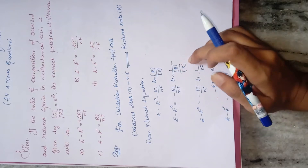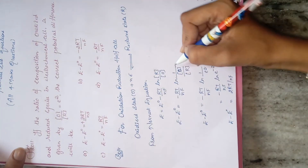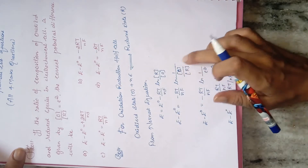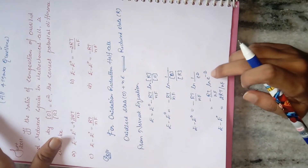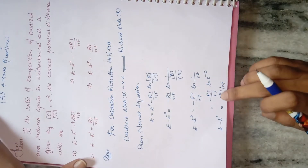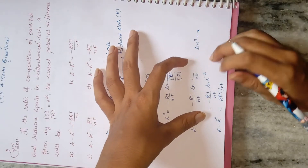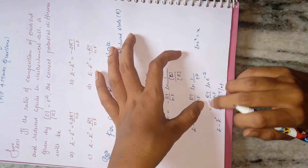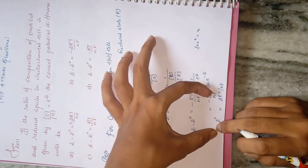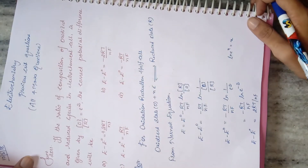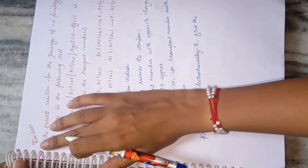Since the question gives us [O]/[R], I write it as 1/([O]/[R]). Substituting [O]/[R] = e², we get 1/e² = e⁻². Using ln(eˣ) = x, the -2 comes out, and the double negative gives: E - E° = +2RT/nF. So the correct answer is option A.